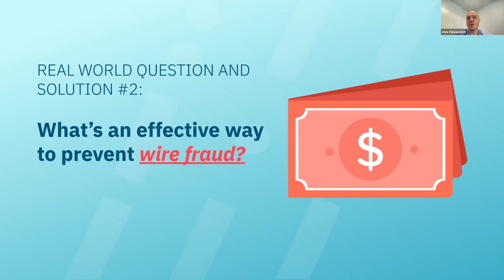If a wire doesn't fit the specific profiling, you can choose to do a manual review. This is where the separation comes between the actual action that your customer takes — either on your app or your website — where they put all the information in, put the amount in, and execute the request to send out the wire.